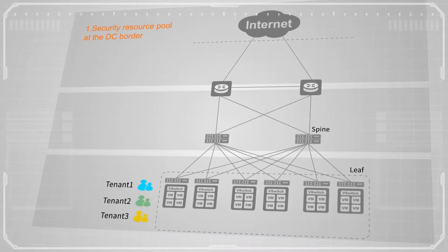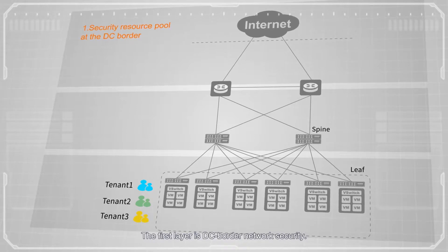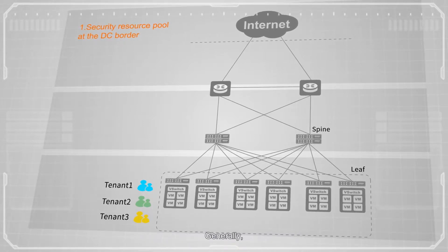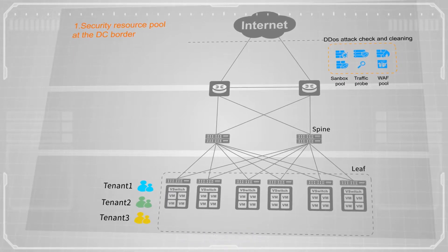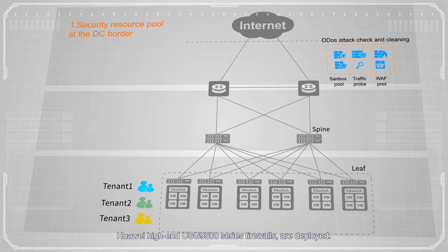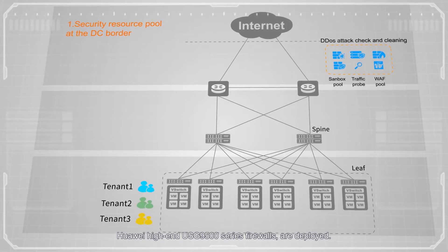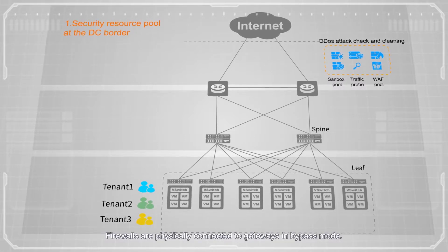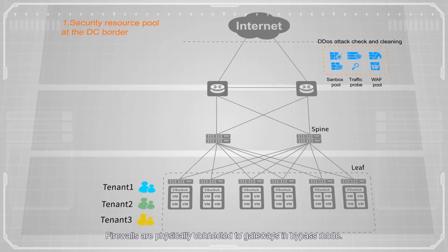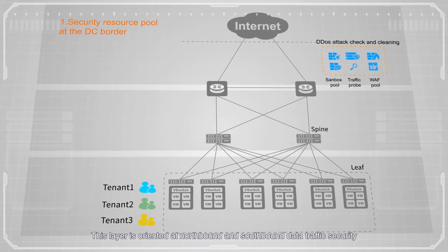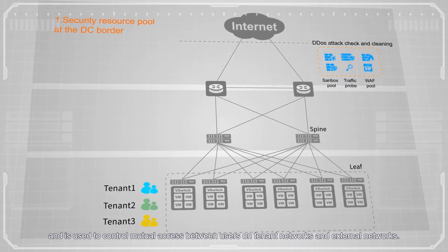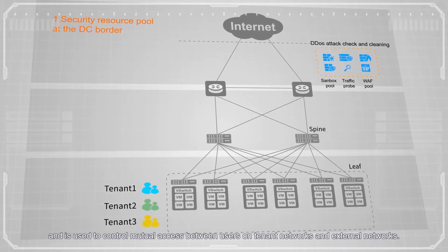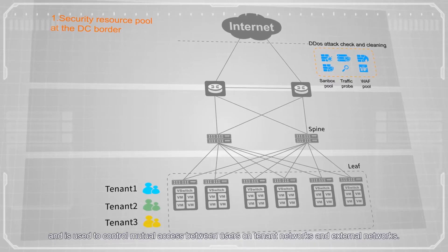In general, network security can be divided into three layers. The first layer is DC border network security. Generally, high-end hardware firewalls — for example, Huawei high-end USG 9500 series firewalls — are deployed. Firewalls are physically connected to the gateways in bypass mode. This layer is oriented at northbound and southbound data traffic security, and is used to control mutual access between users on tenant networks and external networks.